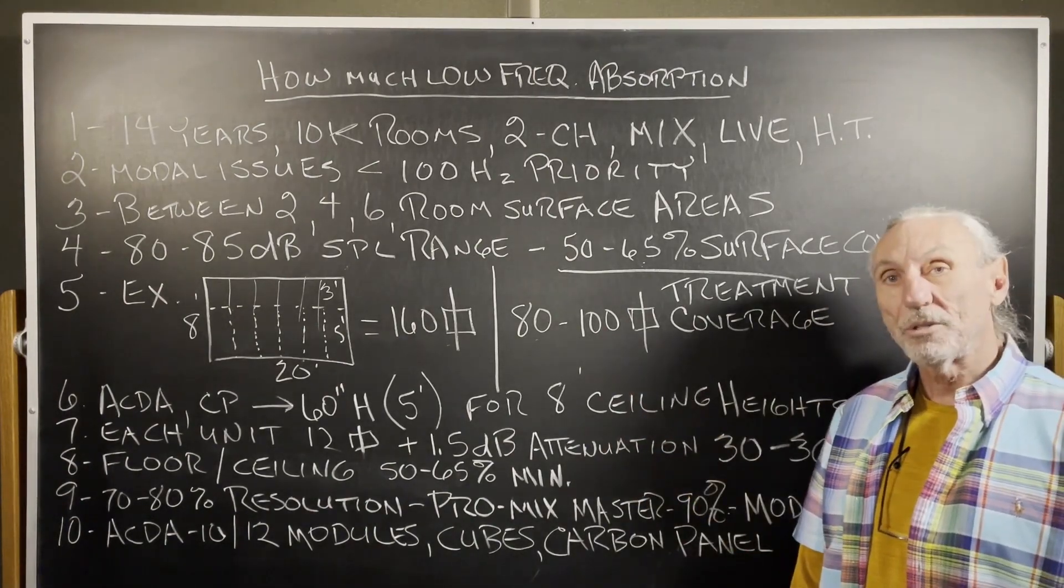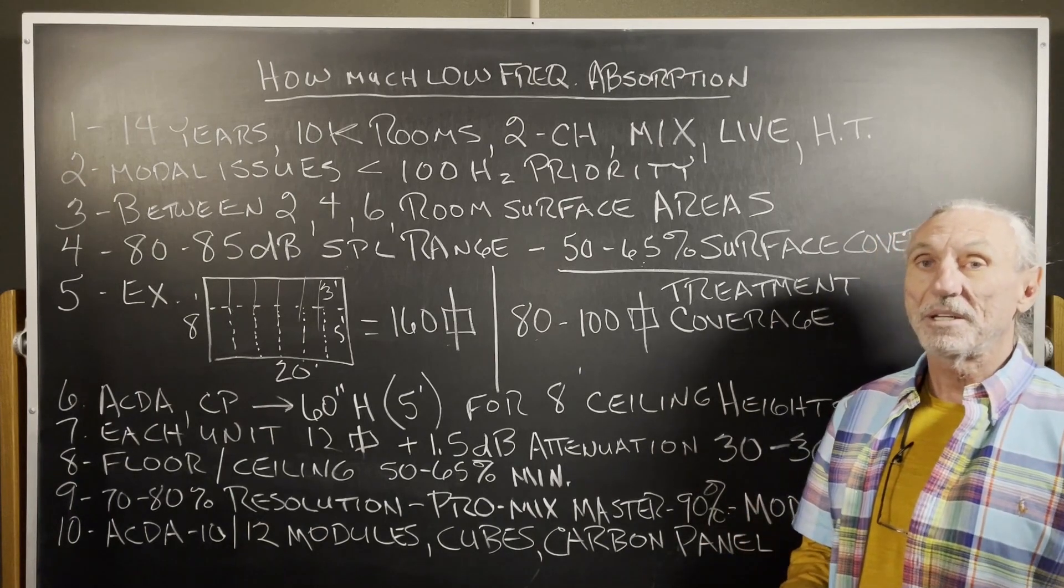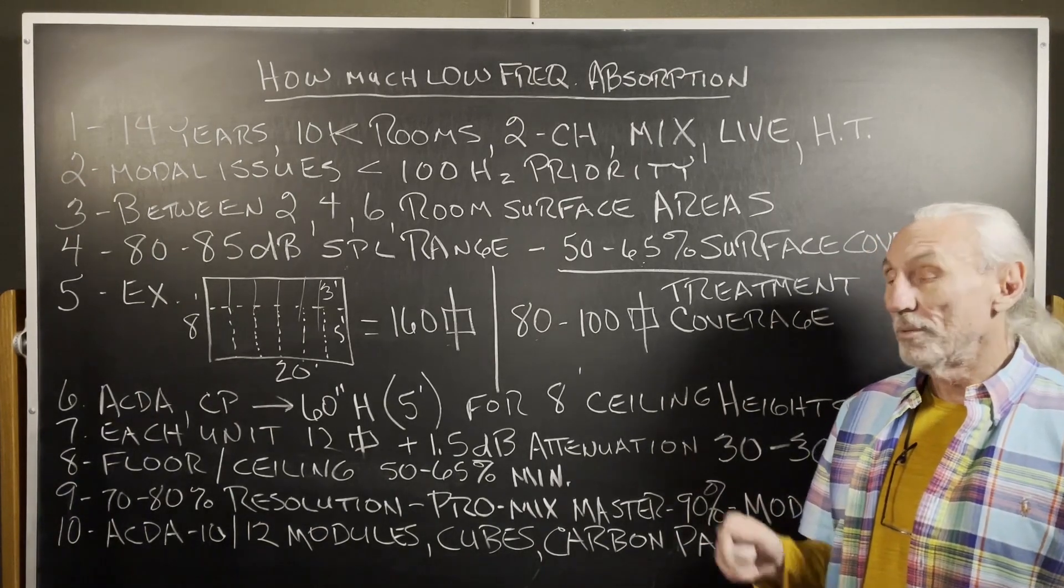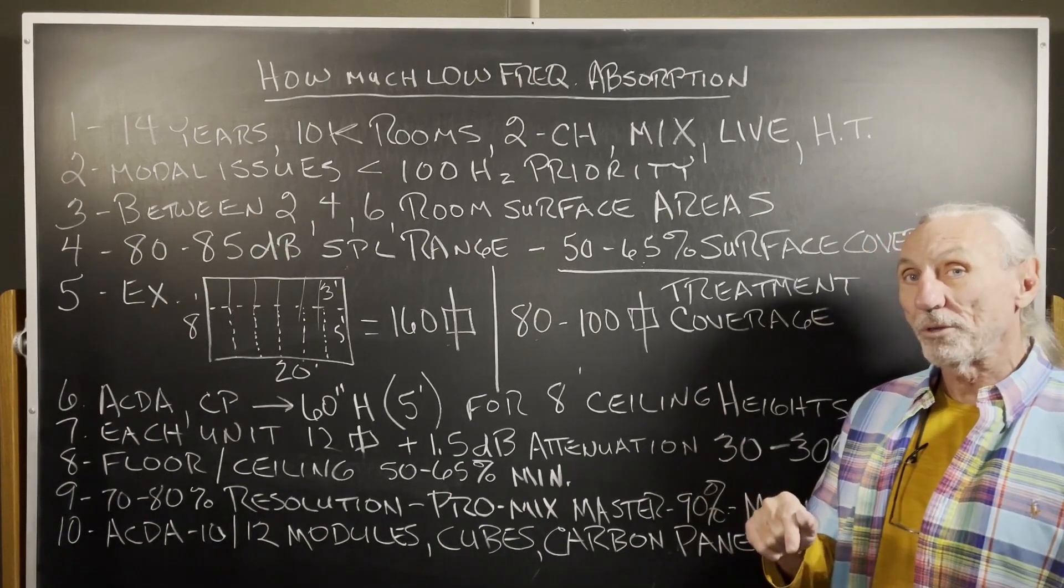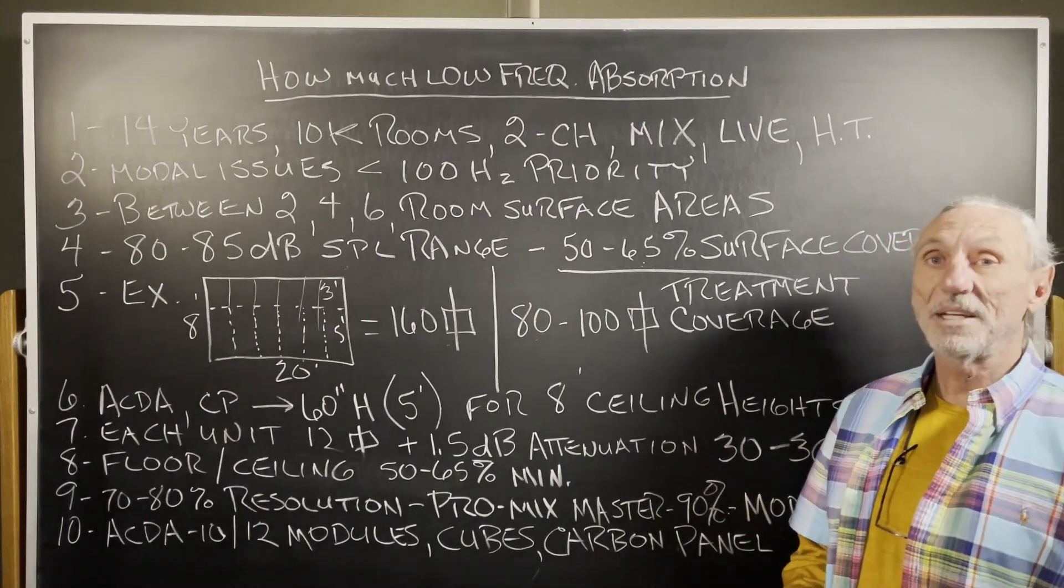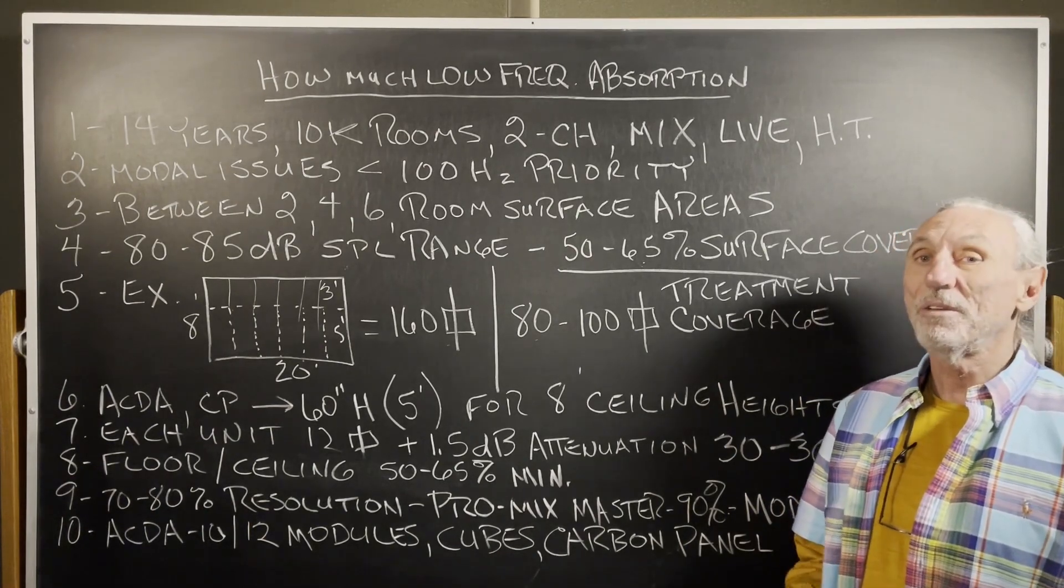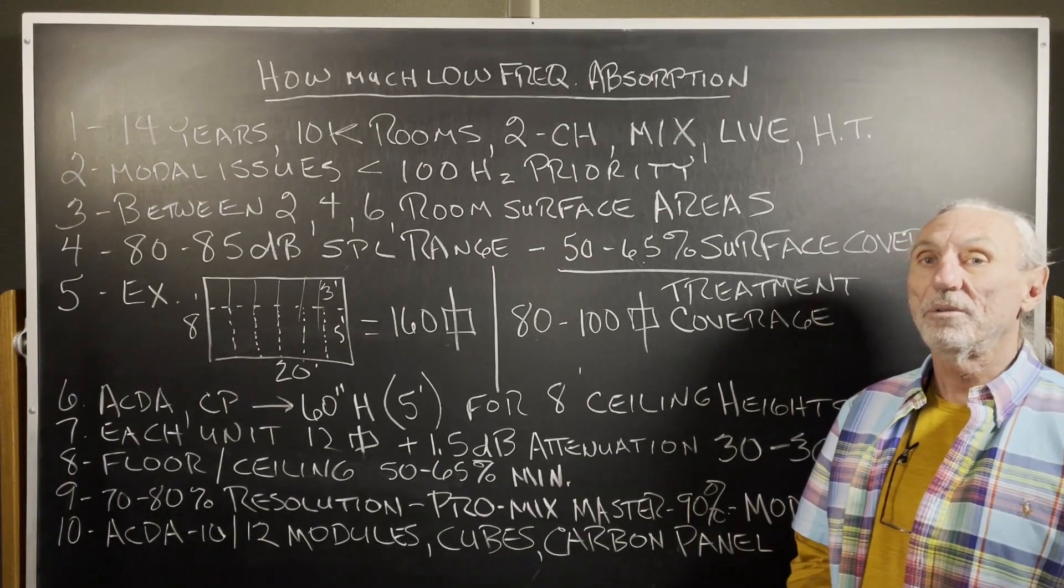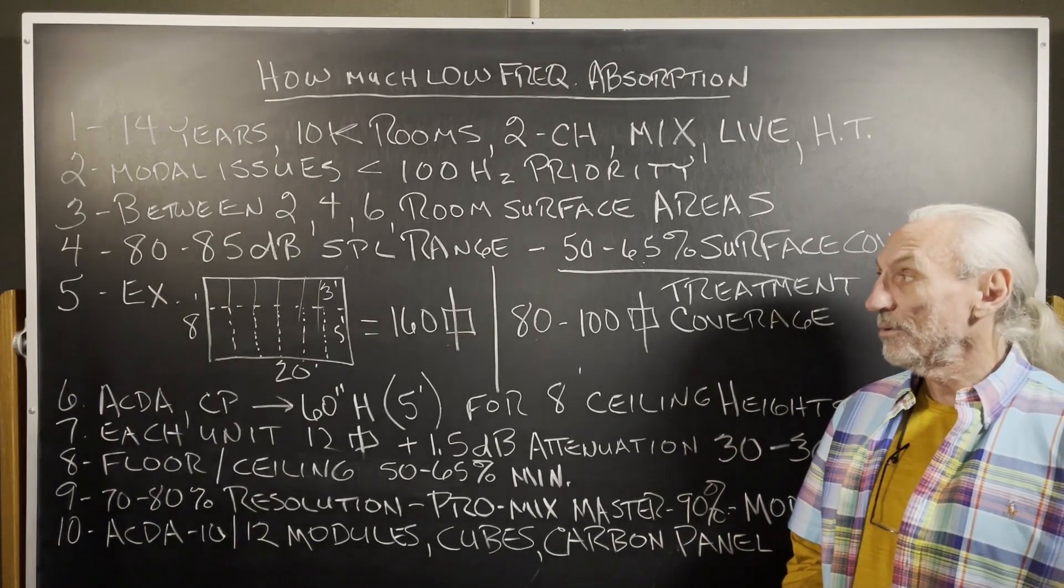50 to 65 percent surface area coverage and 12 inches, because that's the depth of the carbon panel. If you want to go down into 30 cycles, the carbon panel goes to 40. If you want to go to 30, that's the ACDA 10 12 series. That's 16. So you're going to give up three feet on all dimensions. You got to have a big enough room that you can afford to do that.